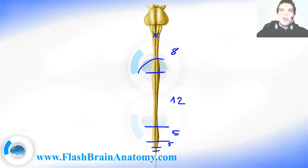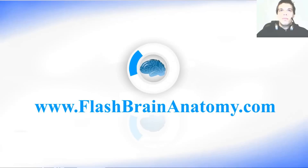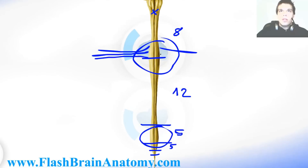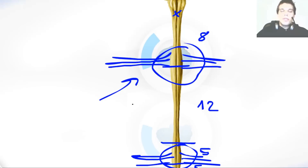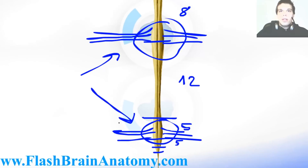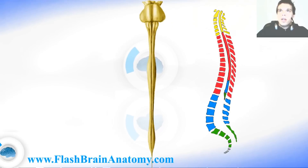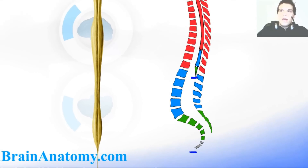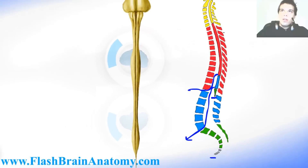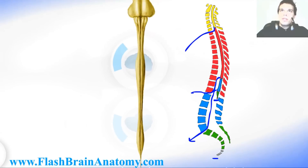You probably noticed two enlargements on the spinal cord. These are explained by the fact that at these locations a large number of spinal nerves exit for the extremities. At the cervical enlargement, they leave for the upper extremities; at the lumbar enlargement, they leave for the lower extremities. The spinal cord is shorter than the vertebral column, which is why the lower spinal nerves travel some distance within the column before exiting.